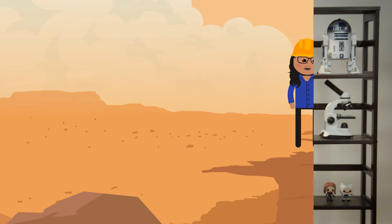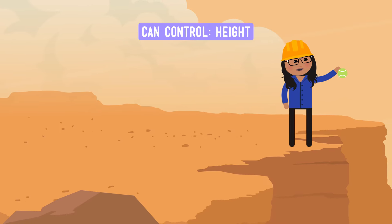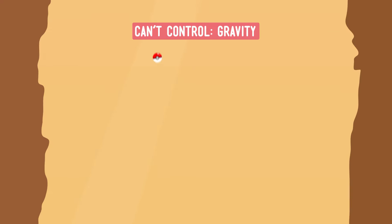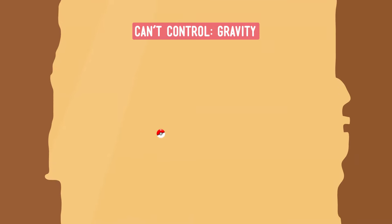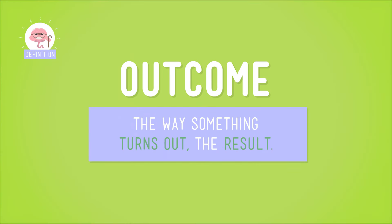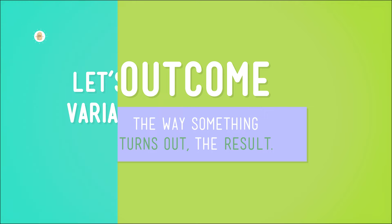Remember, we can control some variables, like the height from which we drop a ball to see how high it bounces. But there are variables we can't control, like gravity. Whether a solution to a problem turns out to be successful or not depends on picking the right way to change a variable. The way something turns out — like whether a solution solves the problem or not — is called an outcome.